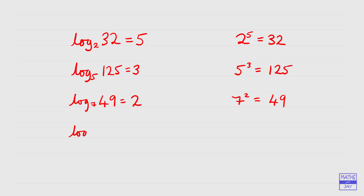Let's have a look at log to base 3, and we'll have 81. We're thinking 3 to the power of something is 81. Well, we know that 9 squared is 81, and 3 squared is 9. So we're squaring 3 and then squaring again, which means we're raising it to the power of 4. So the log to base 3 of 81 is 4.